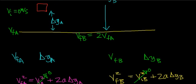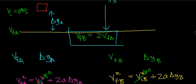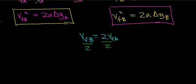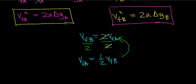Now I'll look more closely at the condition that the final velocity of object b equals twice the final velocity of object a — the same object dropped from two different heights. If I divide both sides of this equation by two, the two cancels and I get v_final_a = ½·v_final_b. These two expressions say the exact same thing — this is simply my condition that we're doubling the velocity.